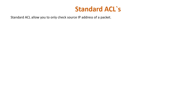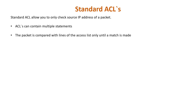Standard access control lists allow you to evaluate only the source IP address of a packet. Standard ACLs are not as powerful as extended ACLs and can't distinguish between types of IP traffic, but they are less CPU intensive. A few things to keep in mind when working with ACLs: both standard and extended ACLs can contain multiple statements; a packet is always compared with each line of the access list in sequential order, starting with the first line; and the comparison stops as soon as a match is made — once a condition is met, the packet is acted upon and no further comparisons take place.